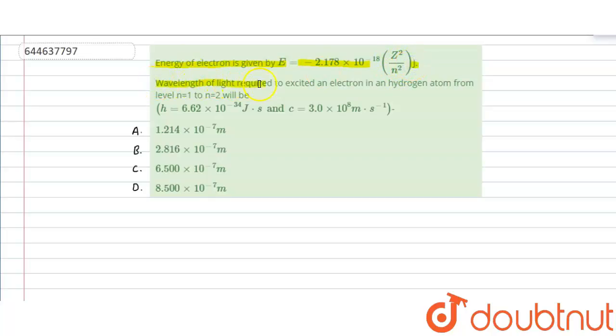The question is: wavelength of light required to excite an electron in an hydrogen atom from level n equals 1 to n equals 2.